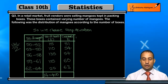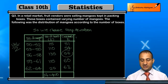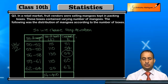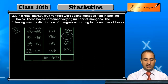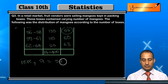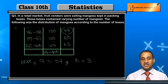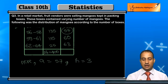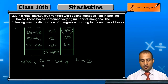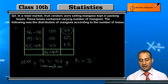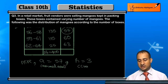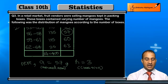Here I will assume a mean. The value I will choose is 57, so the assumed mean A is equal to 57. Similarly, h is the class size — that is our class width, which is 3.